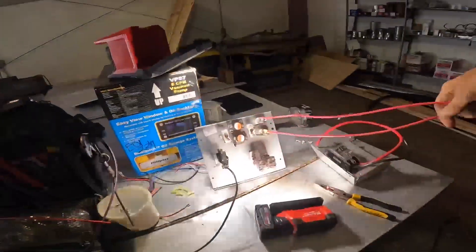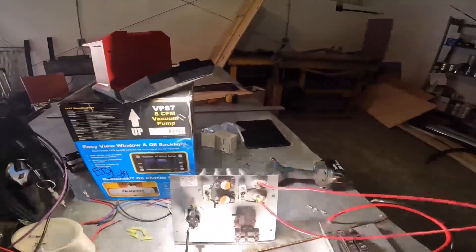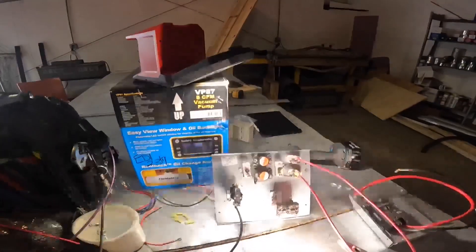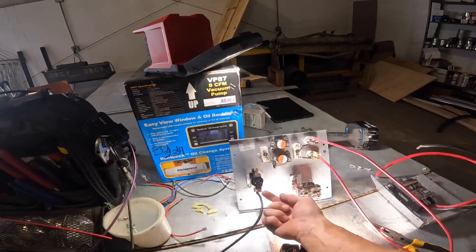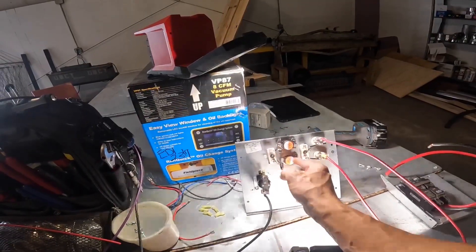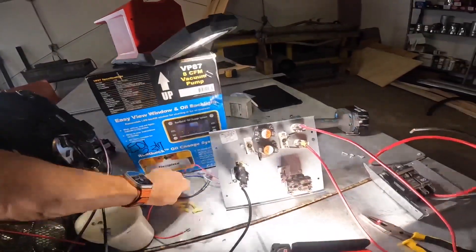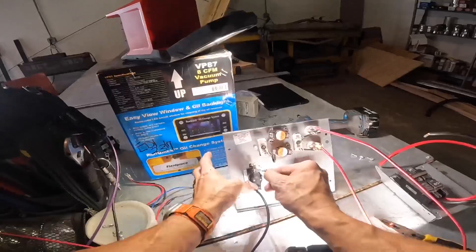Alright, so those are my run windings and they're already wired up. So my common is going here, my sequencer is going to break common and then feed it over here.